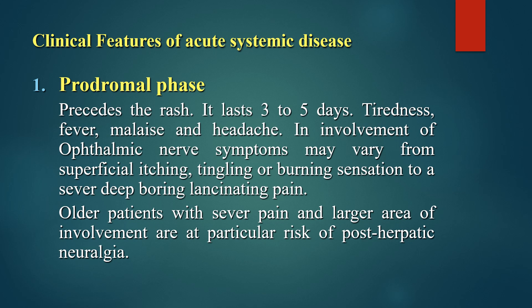The clinical features of acute systemic disease include a prodromal phase that precedes the rash, lasting three to five days, with tiredness, fever, malaise, and headache. With involvement of the ophthalmic nerve, symptoms may vary from superficial itching, tingling, or burning sensation to severe, deep, boring, lancinating pain.